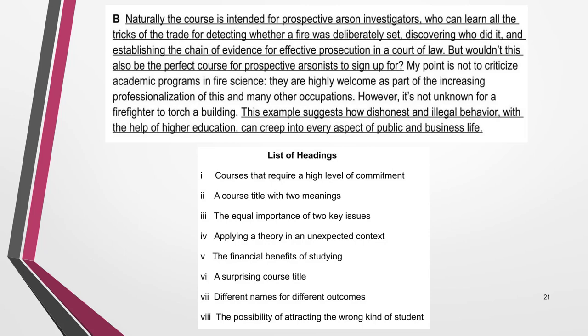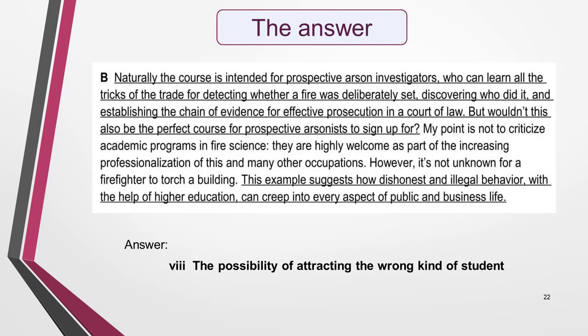It's time to practise this strategy with one of the sections from the sample test paper. Here's the section and the headings again — can you match the right heading? As suggested in the strategy, focus on the first two sentences and the last one; I've underlined them for you. Then skim read the rest of the paragraph. Pause the video while you do this. The correct answer is Heading 8: the possibility of attracting the wrong kind of student. If you didn't get this, study the paragraph again and see if you can work out why it's the correct match.